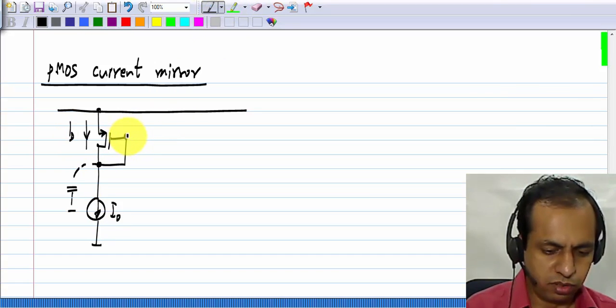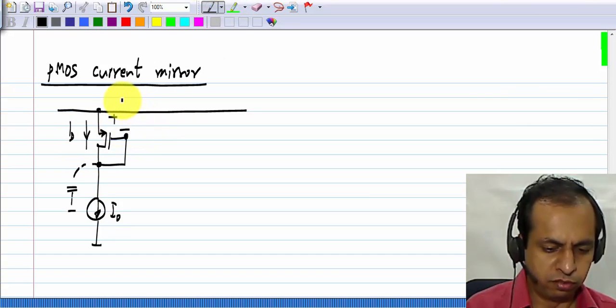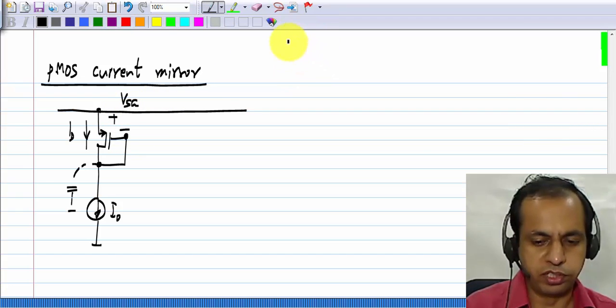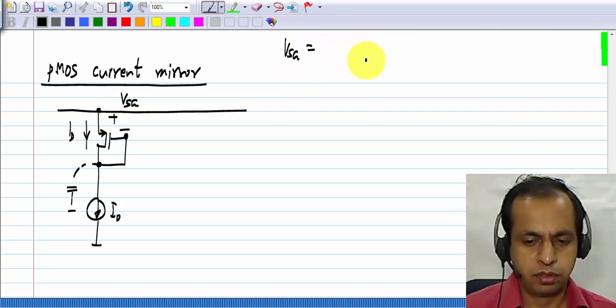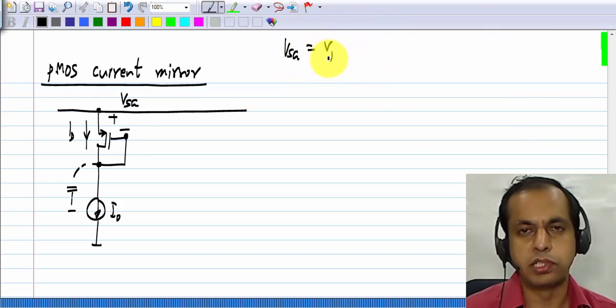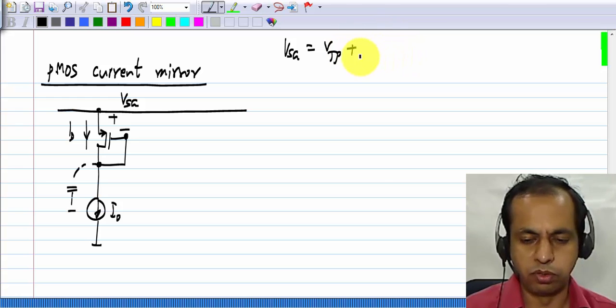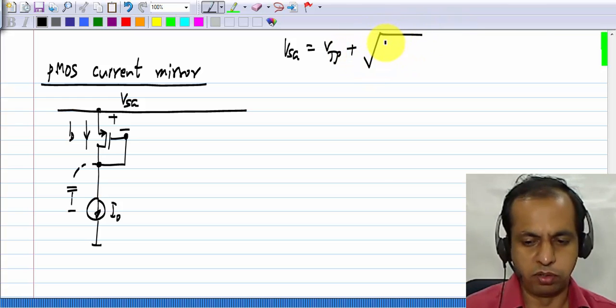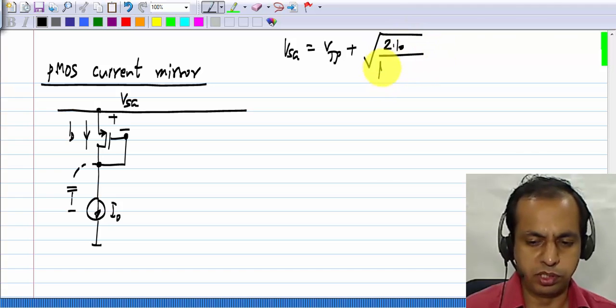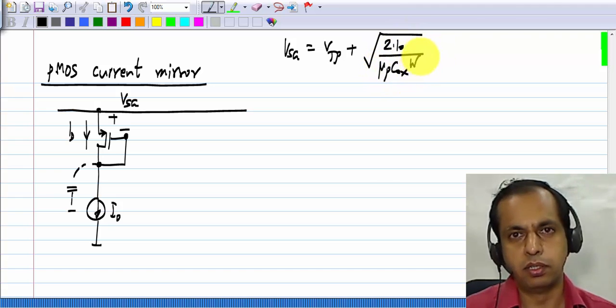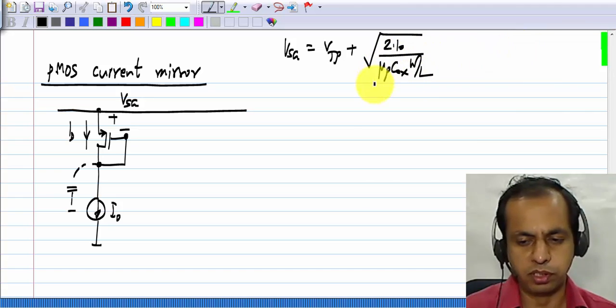Now, this V S G would be equal to the threshold voltage plus square root of 2 times I naught divided by mu p C ox W by L. This is nothing but the current factor.